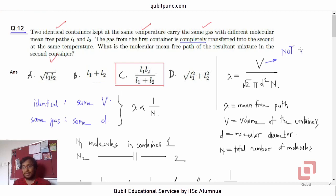But this is not v rms. This is volume, the volume of the container in which that ideal gas is present.